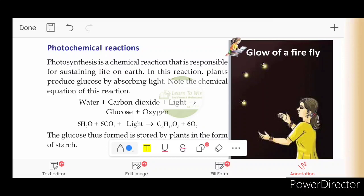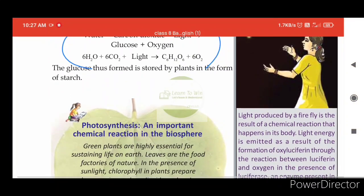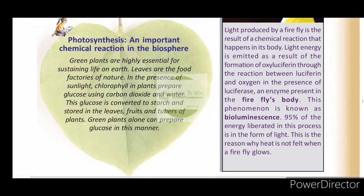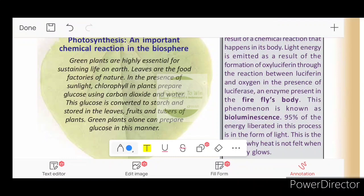What is the photochemical reaction and photosynthesis chemical equation? What is the firefly glow? What is the bioluminescence? Luciferin is present. The firefly will react with oxygen. Oxyluciferin is present. This is because light energy is emitted. This is the process of bioluminescence. 95% of the energy is liberated. That is why it is shown.